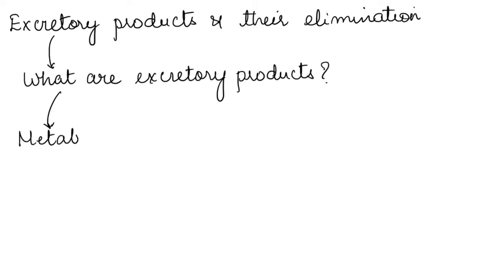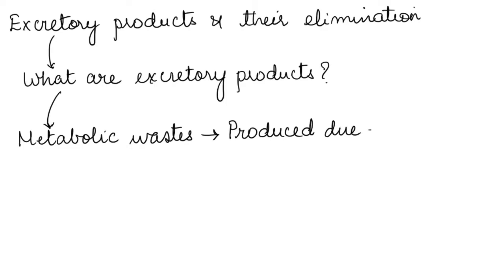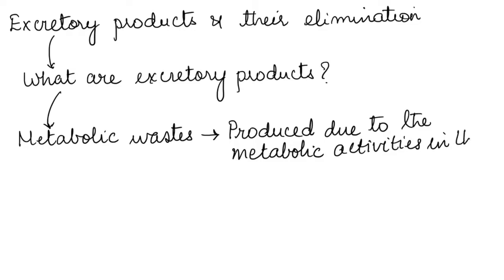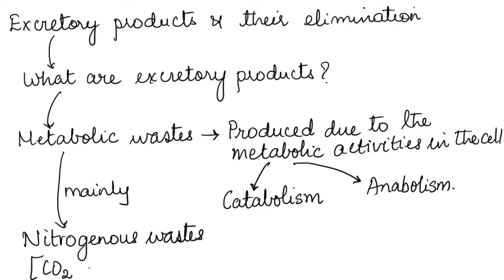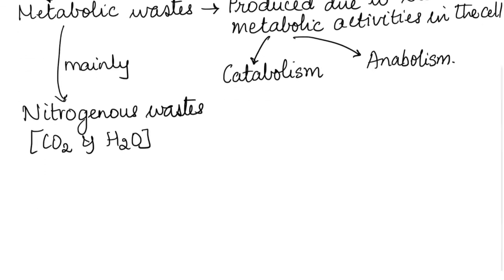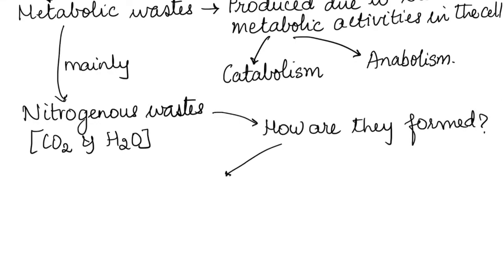These are metabolic wastes. Metabolic wastes are produced due to the metabolic activity that takes place in the cells of our body. Metabolic activities or metabolism includes anabolism and catabolism. Catabolism is breakdown of substances whereas anabolism is when complex substances are made from simple ones. So these mainly result in producing the nitrogenous wastes. Apart from this, carbon dioxide and water are also called metabolic wastes.